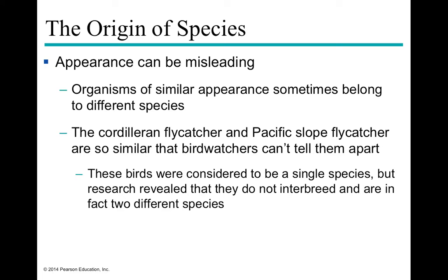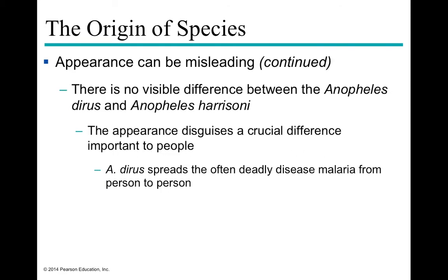The appearances of organisms can be misleading. Sometimes organisms appear similar but belong to two different species entirely, such as the Cordilleran flycatcher and the Pacific Slope flycatcher. Most birdwatchers can't tell them apart. For a very long time they were considered to be a single species, but it was recently revealed that they do not interbreed and are in fact two entirely different species, even though there's no visible difference between them.